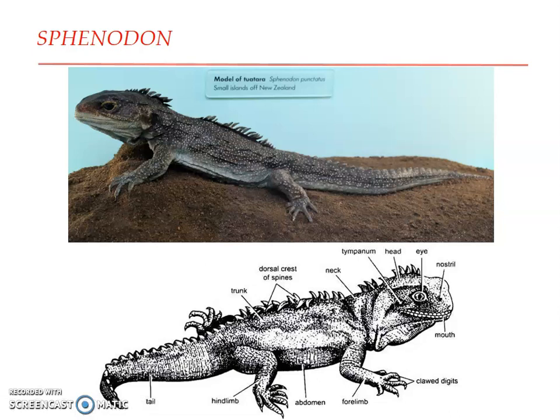The lower skin surface has transverse rows of large squarish plates. Its color is dull olive green with white and yellow spots, as you can see clearly here. Its eyes are large and dark brown, and the pupil is vertical, just like that of lizards. Regarding skeletal features, the vertebrae are amphicoelous, as against procoelous in other reptiles.